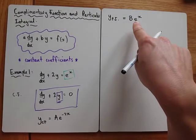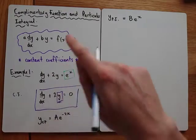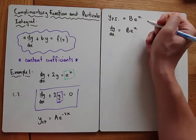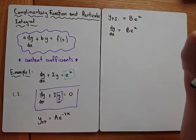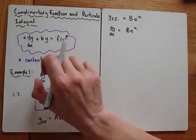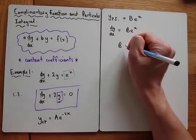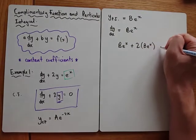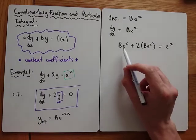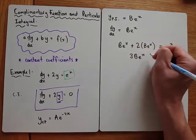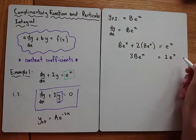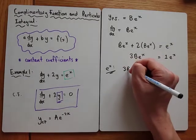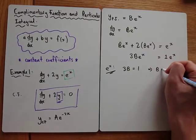Once you've decided what your particular integral is, you sub it into the differential equation. Before we sub it in, let's differentiate it: since it's be to the x, the derivative is also b e to the x. So: dy by dx is b e to the x, plus 2y which is also b e to the x, equals e to the x. So we get 3b e to the x equals 1 e to the x, and equating coefficients on both sides, 3b equals 1, which gives b equals one third.